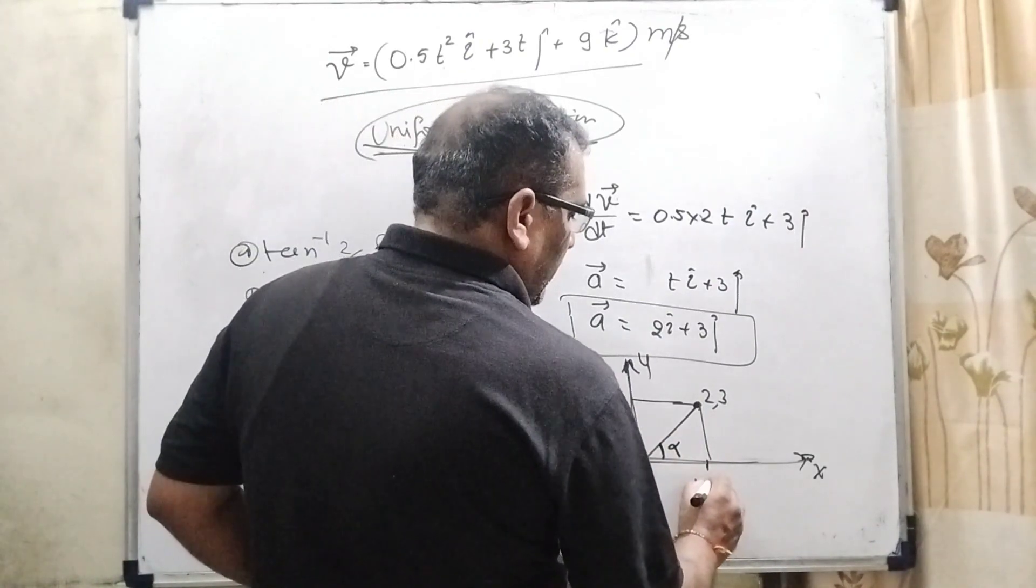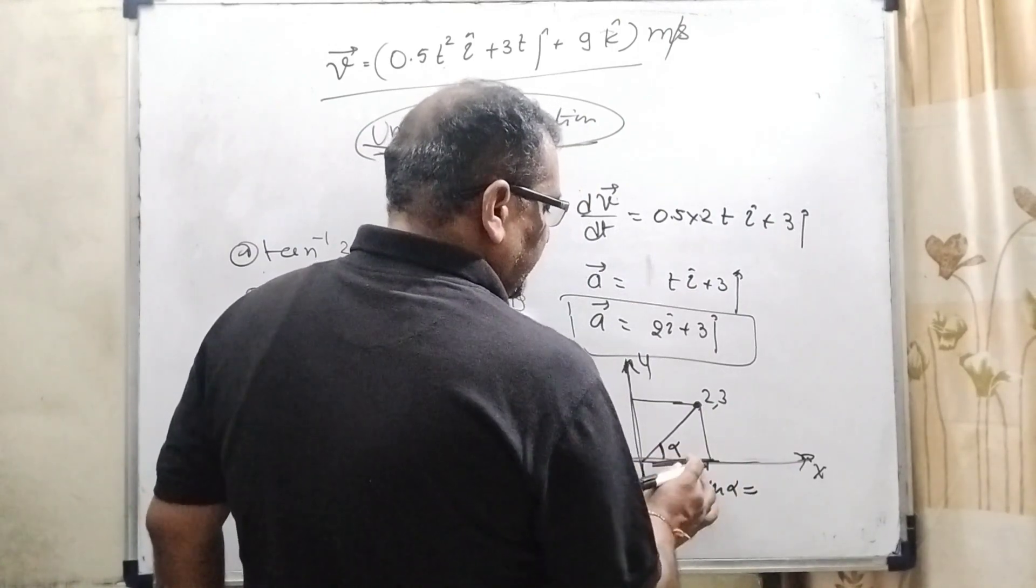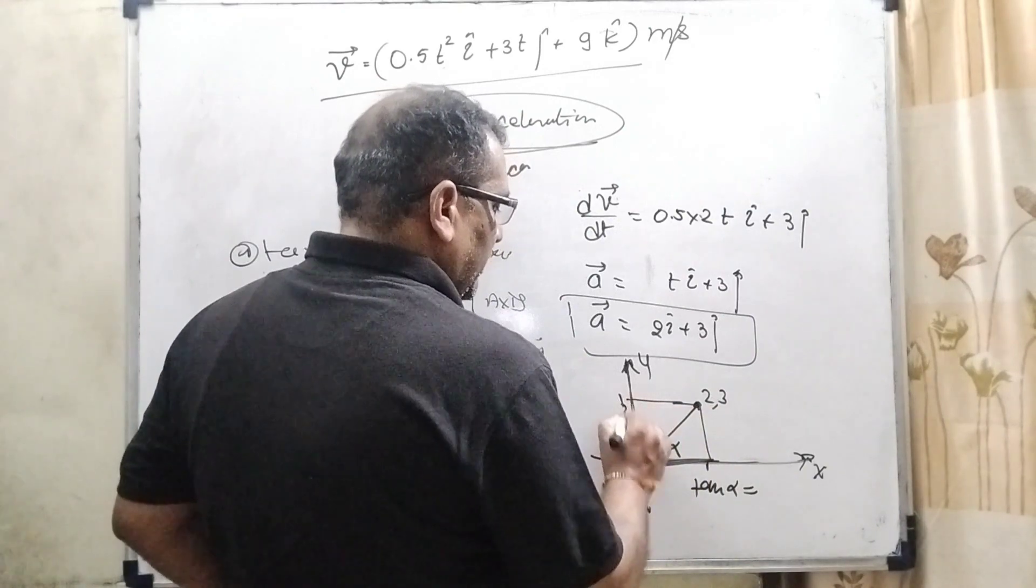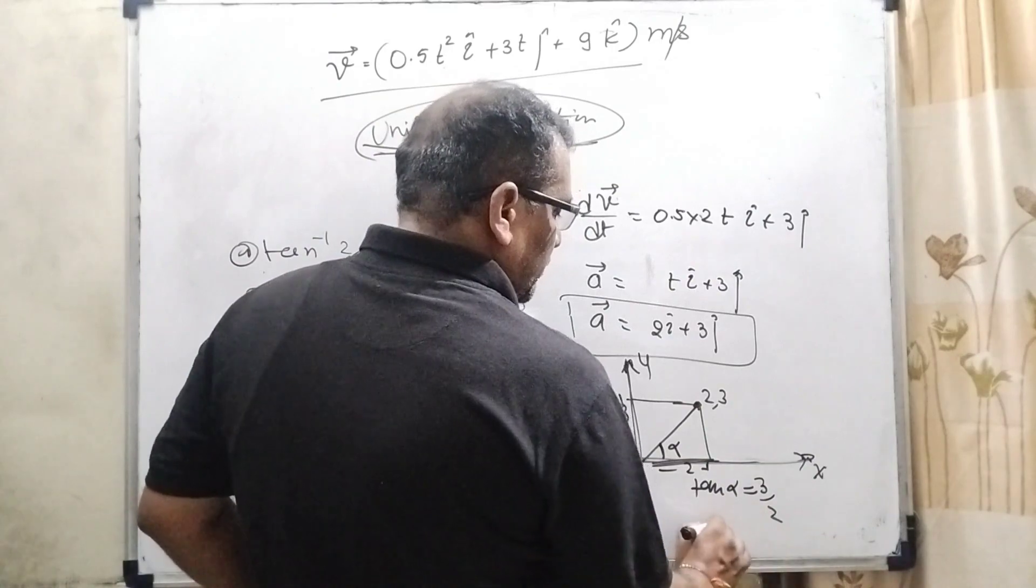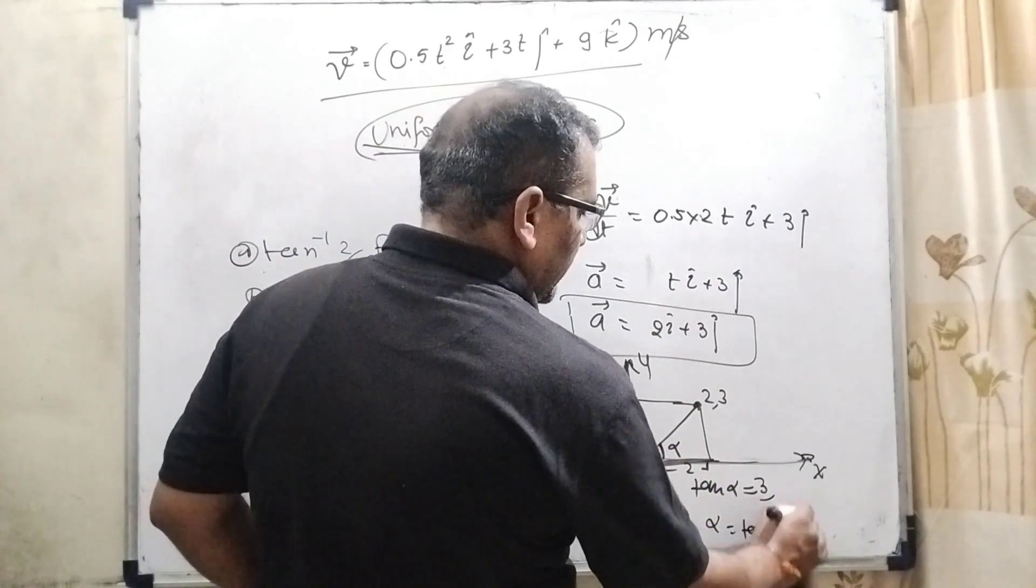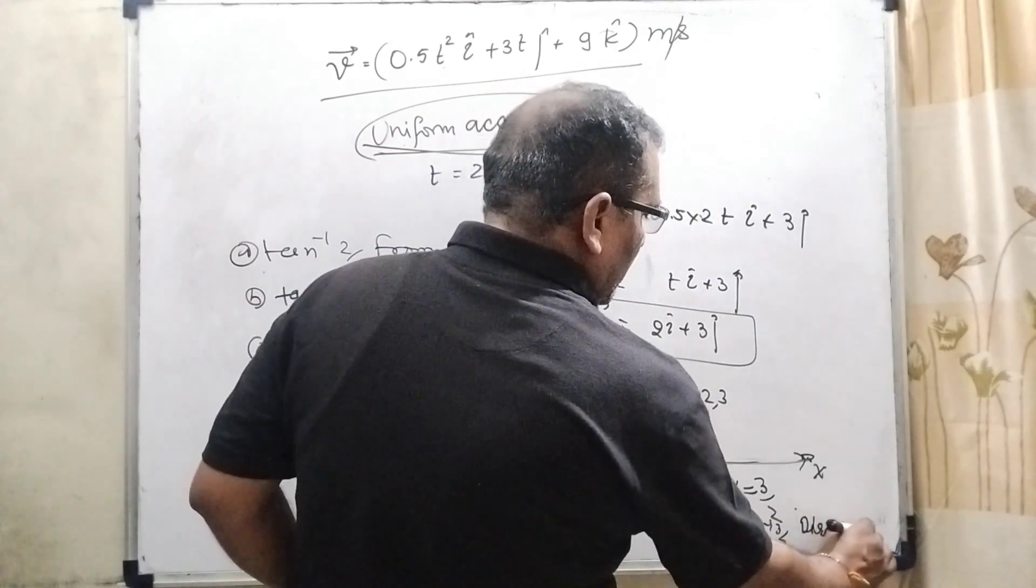Let us consider this point is formed alpha. So tan alpha, with respect to we have to consider this is base, this is perpendicular and what is the value of perpendicular that is 3 and what is the value of base that is 2. So alpha equal to tan inverse 3 by 2 in the direction of x-axis.